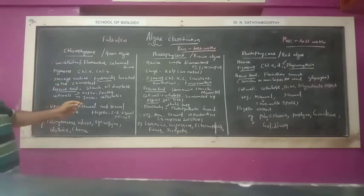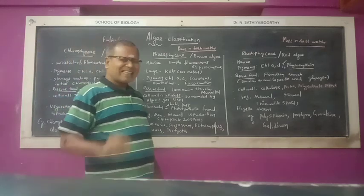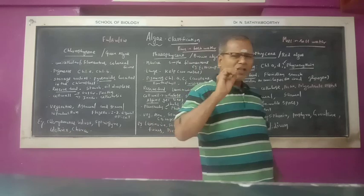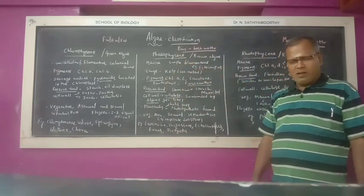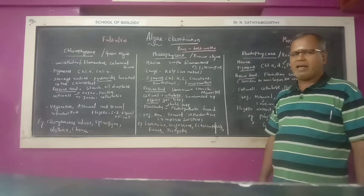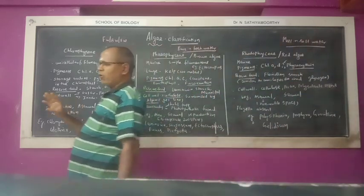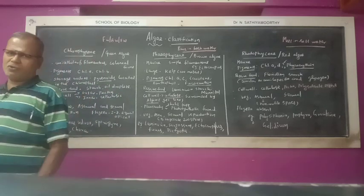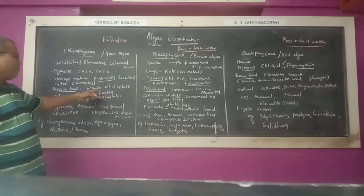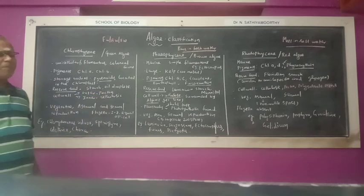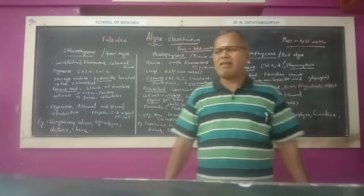In Chlorophyceae, the reserve material are starch and oil droplets. Certain organisms produce starch. The outer cell wall is made up of pectin and the inner cell wall is made up of cellulose. Generally, the cell wall is made up of cellulose.